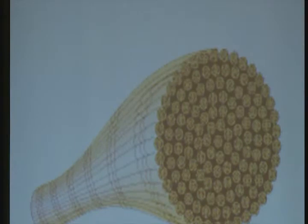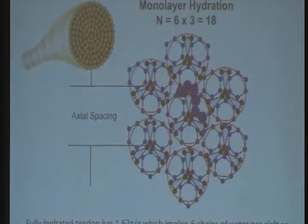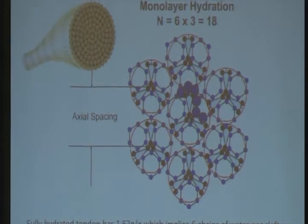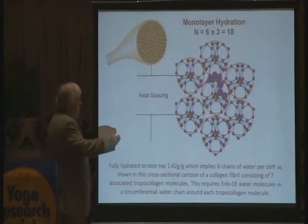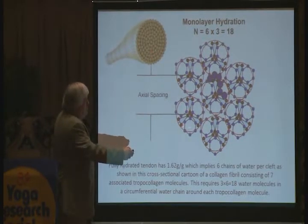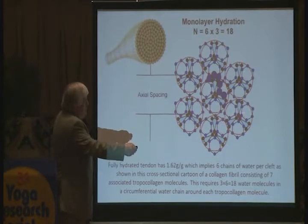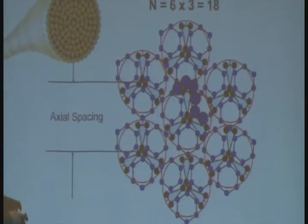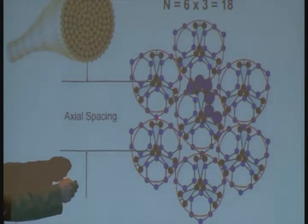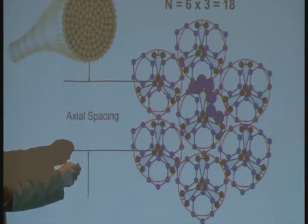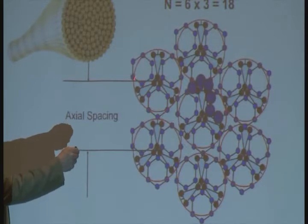Here is a tendon or collagen bundle — a bundle of these fibers. There's a lot of research on determining the water content of collagen and where the water is. This is a cross-section: this is one collagen fibril, and this is another one, and another one. In this particular paper they've taken the wet weight of the collagen and determined how many water molecules have to be in there, and it looks like the waters are in hexagonal arrays — three of them for each fibril.